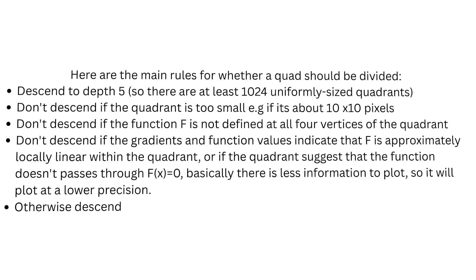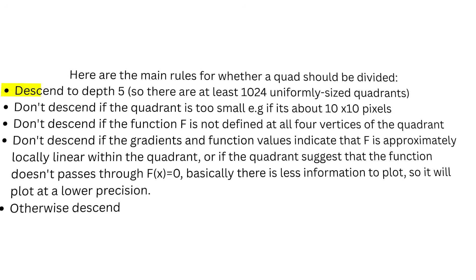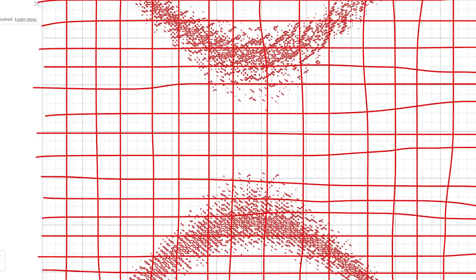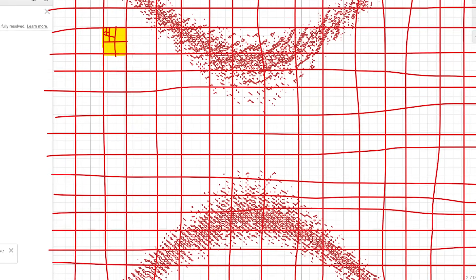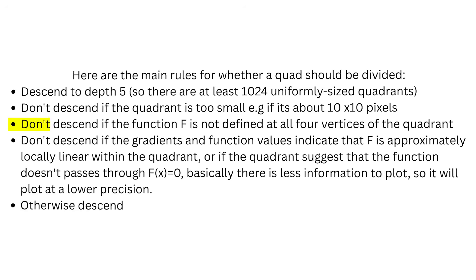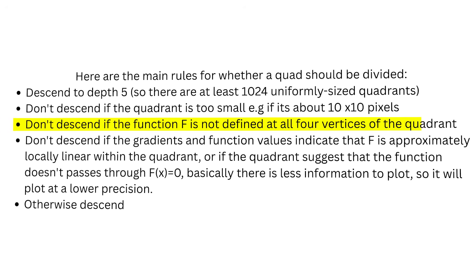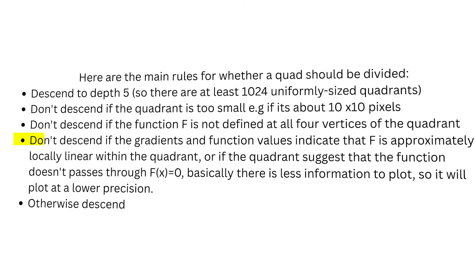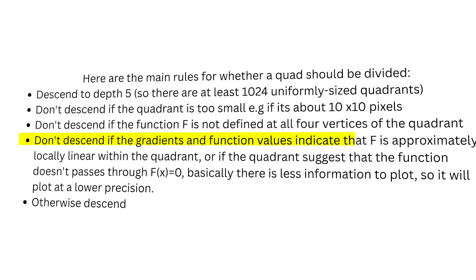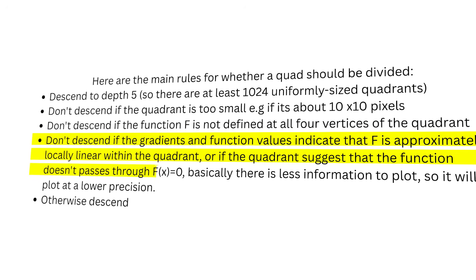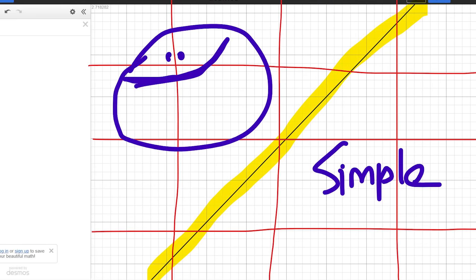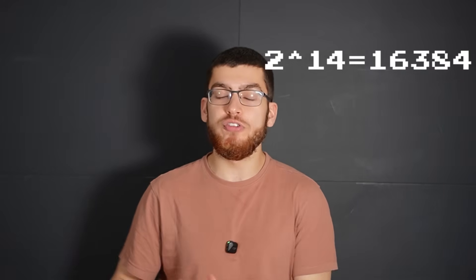Here are the main rules for whether a quadrant should be descended or divided into four pieces. First, descend down to a depth of 5 so that there are at least 1024 uniformly sized quadrants. Don't descend if the quadrant is too small, for example if it's only about 10x10 pixels. Don't descend if the function f is not defined at all four vertices of the quadrant. Don't descend if the gradients and function values indicate that f is approximately locally linear within that quadrant, or if the quadrants suggest that the function doesn't pass through f of x equals 0. The algorithm stops if the total number of quadrants exceeds 2 to the power 14, which is 16,384.